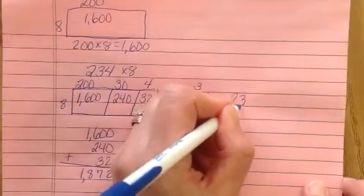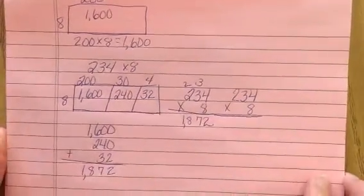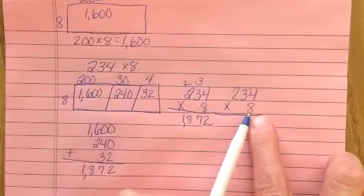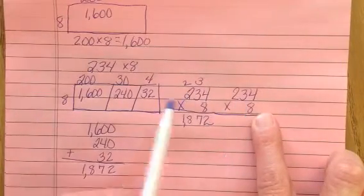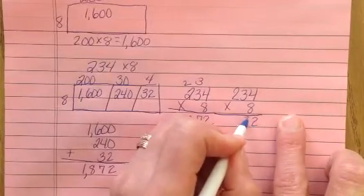If I try the partial product method, right next to the standard algorithm, 8 times 4 is 32. That's just what we have in our area model.